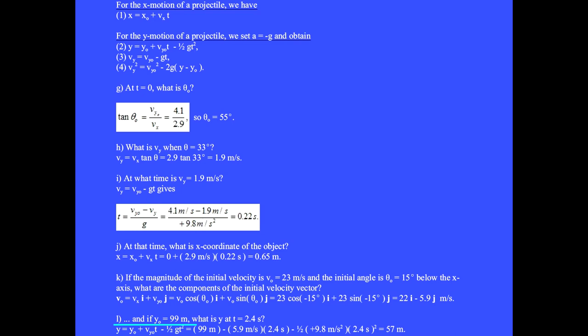Question L: If y sub 0 is 99 meters, what is y at t equals 2.4 seconds? Using equation 2, y equals y sub 0 plus v sub y 0 t minus one half g t squared, we get 57 meters.